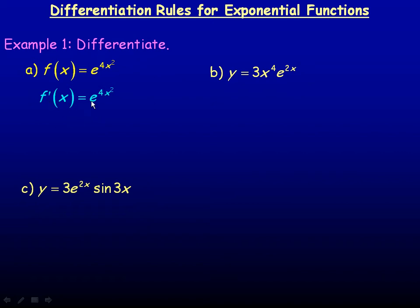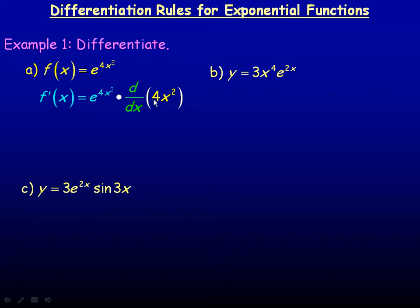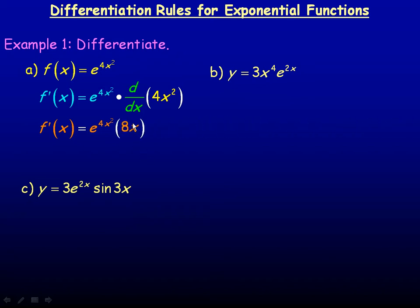So f prime of x equals e to the 4x squared times — now the exponent is not just an x. The derivative of e to the x is e to the x, but the exponent is a function of x, 4x squared, so we also multiply by the derivative of that exponent. And of course that's 8x, so we have e to the 4x squared times 8x. I prefer to write the 8x on the left, so I'll write it as 8x e to the 4x squared.